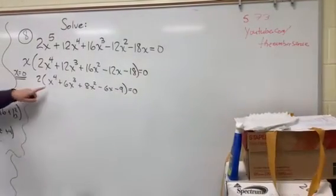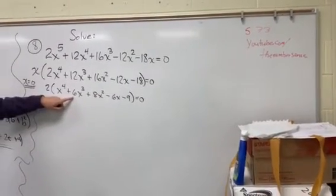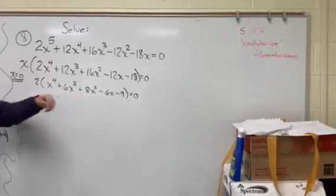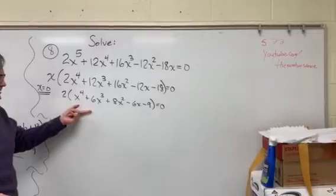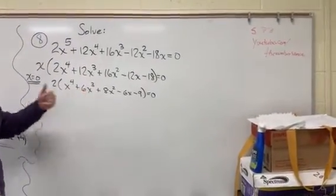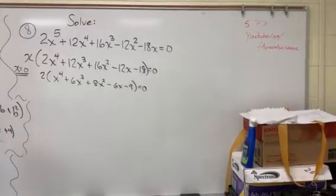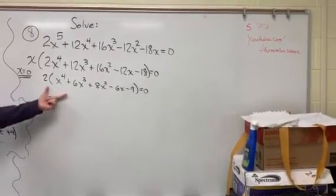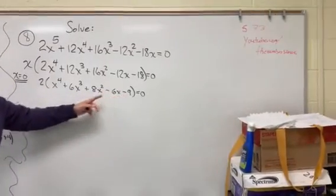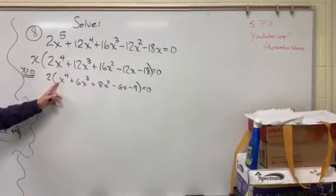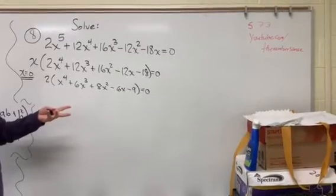And so now we have a fourth degree polynomial: x to the fourth, 6x cubed plus 8x squared minus 6x minus 9. So if we're looking at solving this, there's really no way that we can factor this. We have not covered enough techniques to factor fourth degree polynomial with five terms. So then the next thing is to look at possible rational roots, p over q, factors of 9 over factors of 1, and factors of 9 would be plus or minus 1, or 3, or 9.